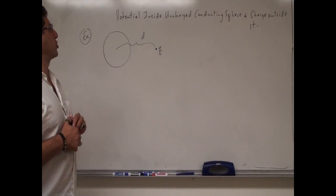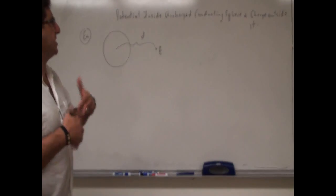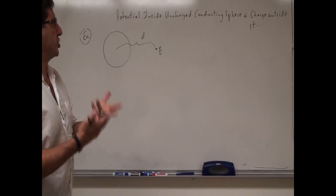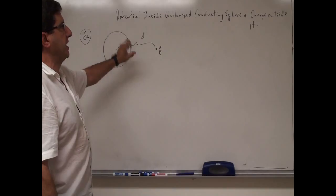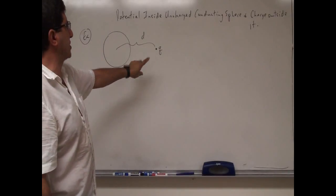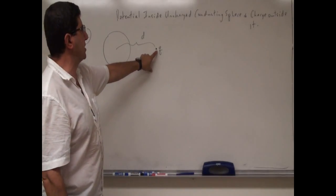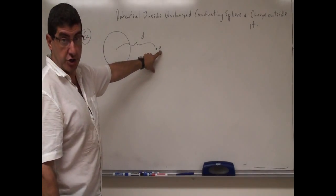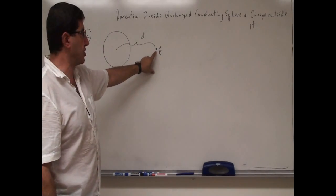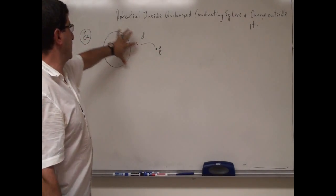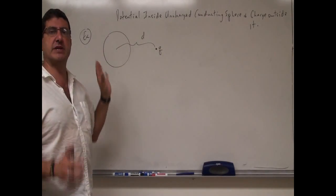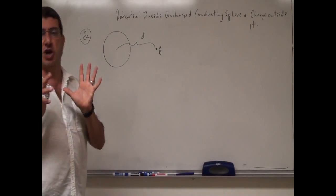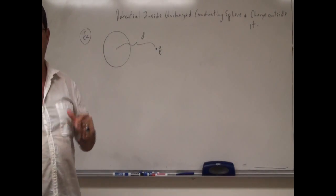Welcome back. The problem I'm going to do is called the potential inside of an uncharged conducting sphere with a charge outside of it. So imagine there's a point charge Q here, and this is a conducting sphere that is initially uncharged.